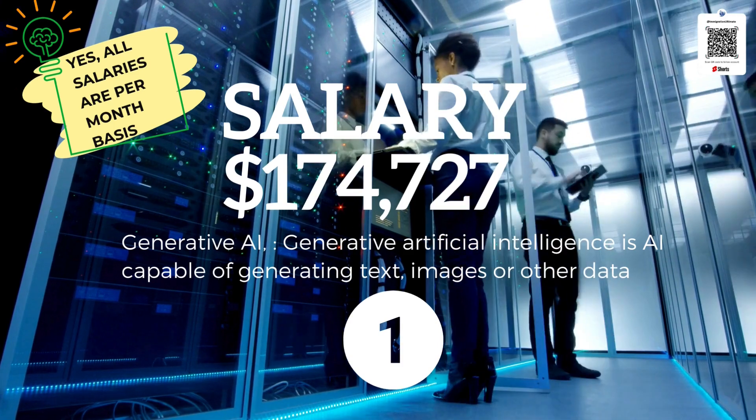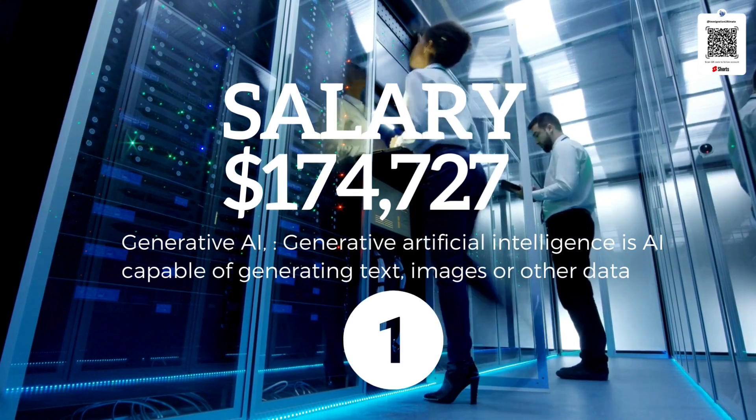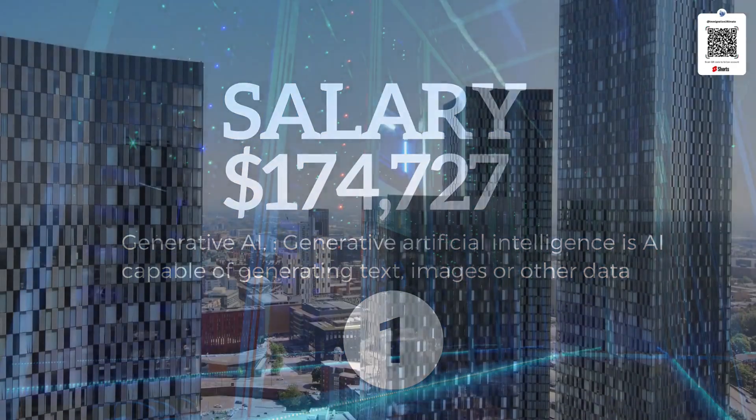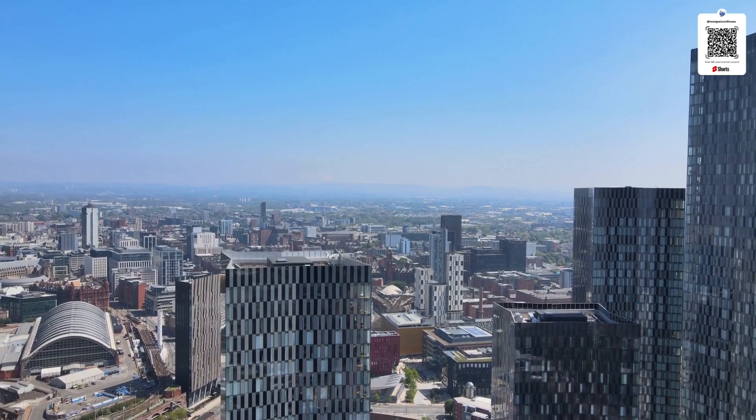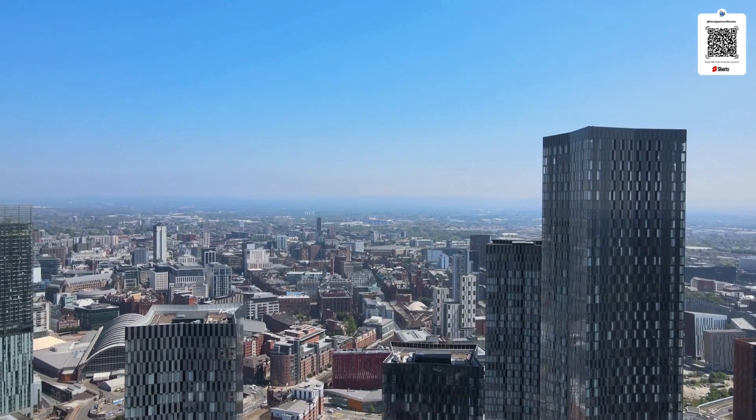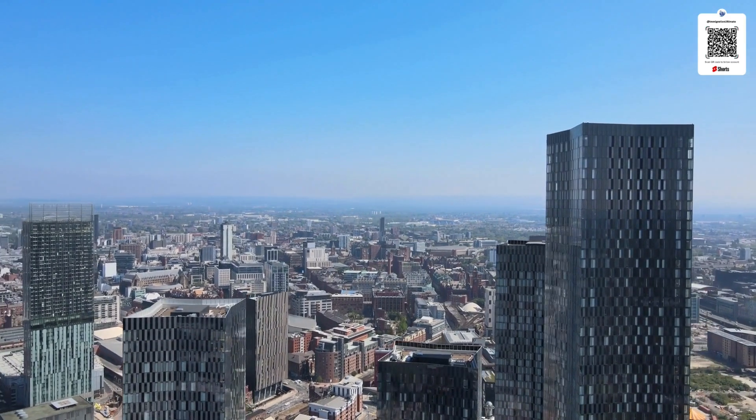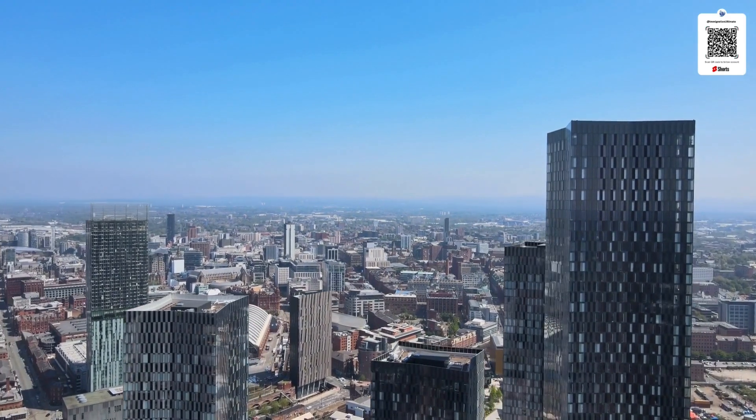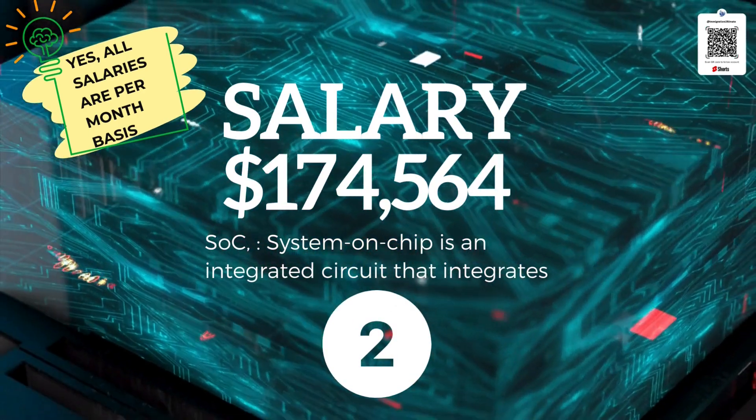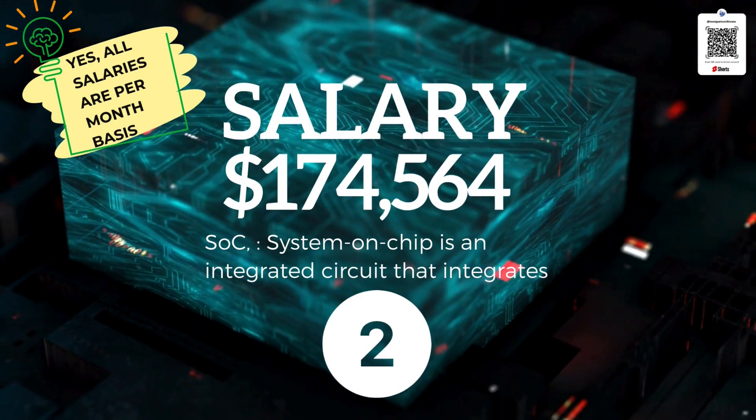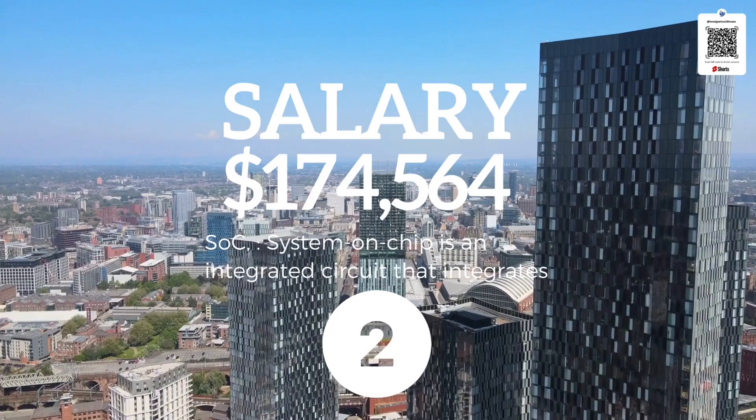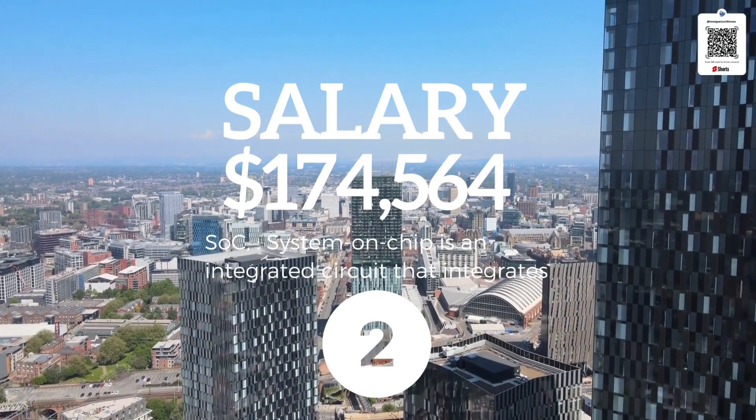Number one is Generative AI, with a salary of $174,727. Generative artificial intelligence is capable of generating text, images, or other data using generative models, often in response to prompts. Number two is Systems on Chip, or SOC, attracting $174,564. Systems on Chip is an integrated circuit that integrates most or all components of a computer or other electronic systems.